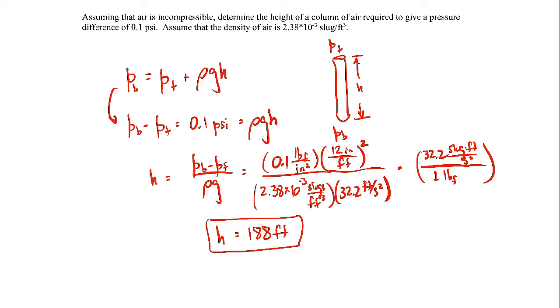Now granted, we assumed that air was incompressible here. Air would often be considered compressible. Even still, you have to go to pretty large height differences to get any sort of appreciable pressure difference. When we're dealing with gases like air, you don't have to worry about the pressure difference caused by differences in elevation unless you're dealing with very large elevations on the order of hundreds, if not thousands of feet difference.